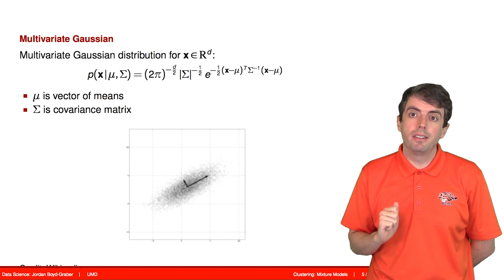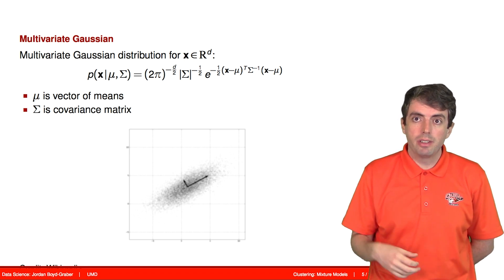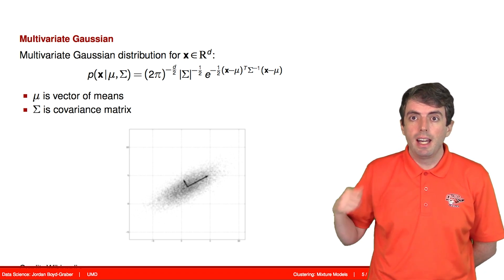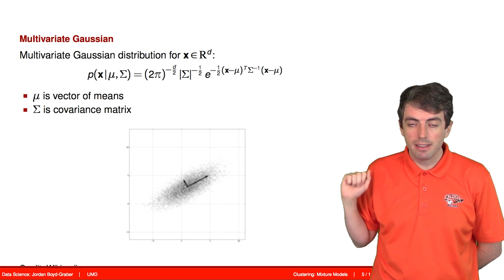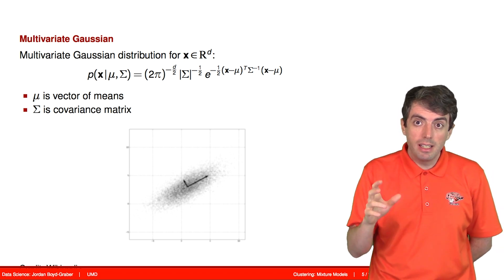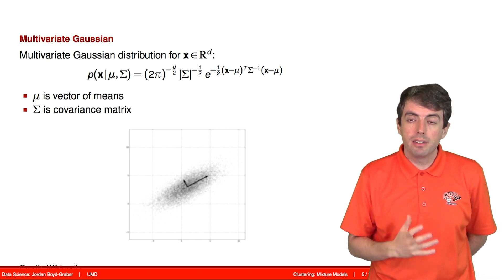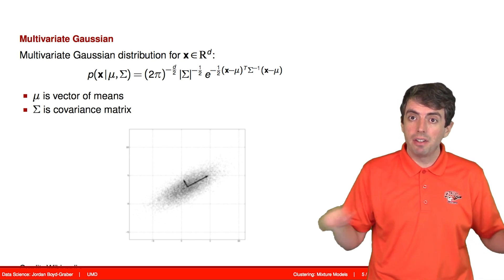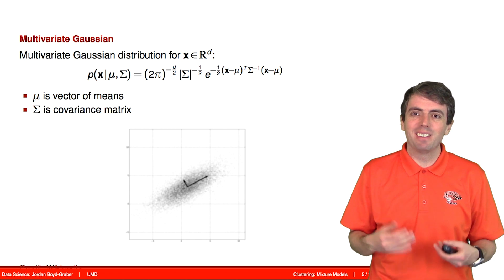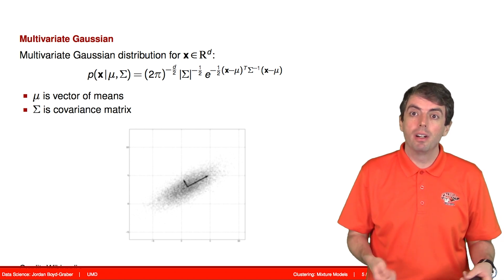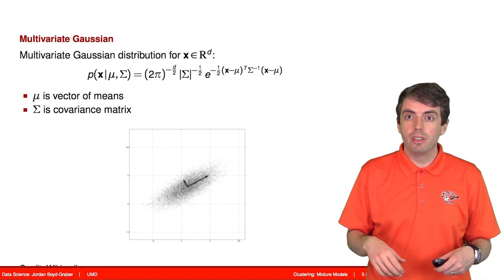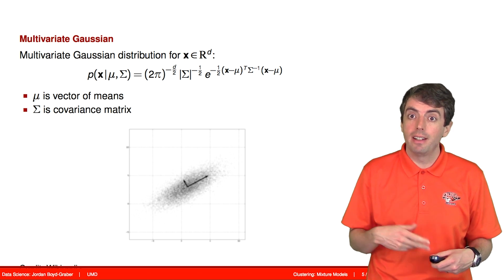So recall the Gaussian distribution. The Gaussian distribution is defined by a mean and a variance. And so the mean corresponds where the center of the distribution lives, and the variance says how spread out it is. If we encode the variance as a matrix instead of just a single number, this allows the distribution to be spread out more in one direction than another direction.